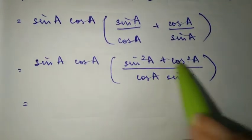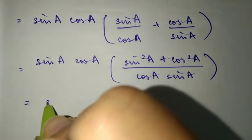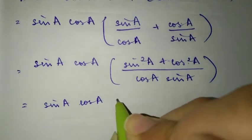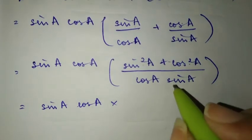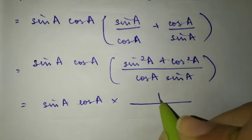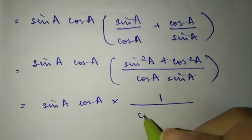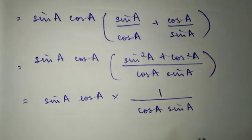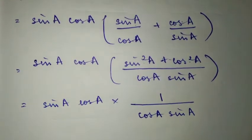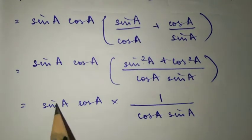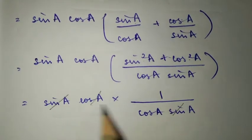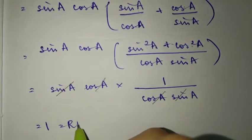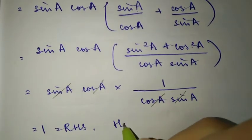Now sin square A plus cos square A by formula equals one. The sin A cos A outside and the LCM cos A sin A cancel each other. So you are left with 1, which equals the right hand side — hence proved.